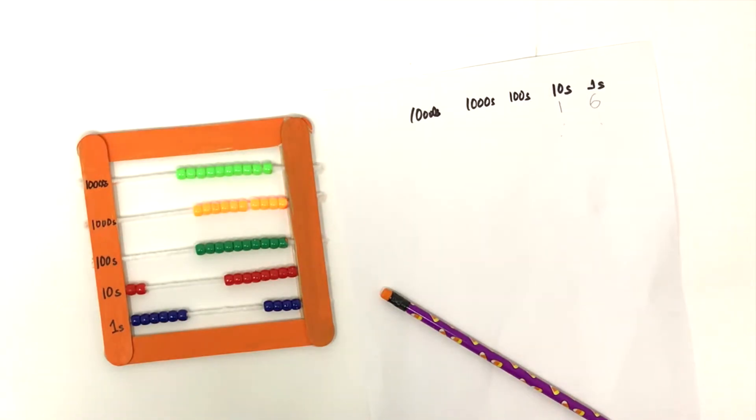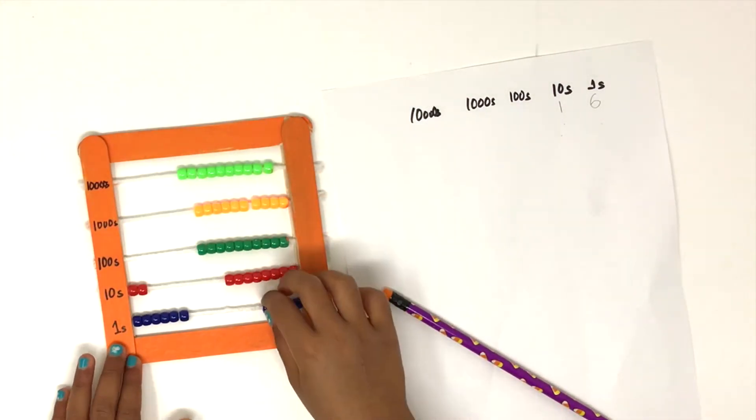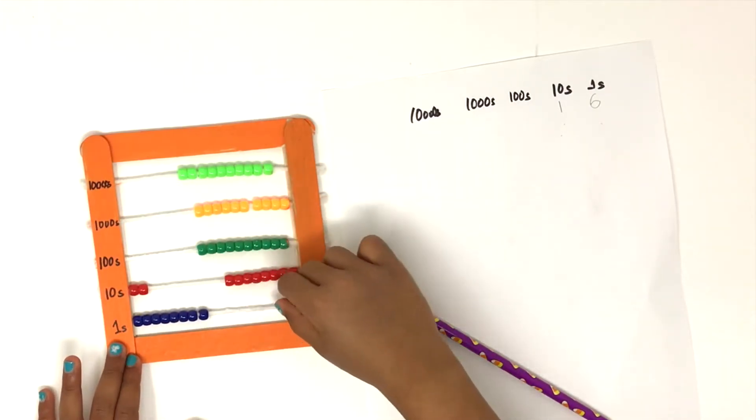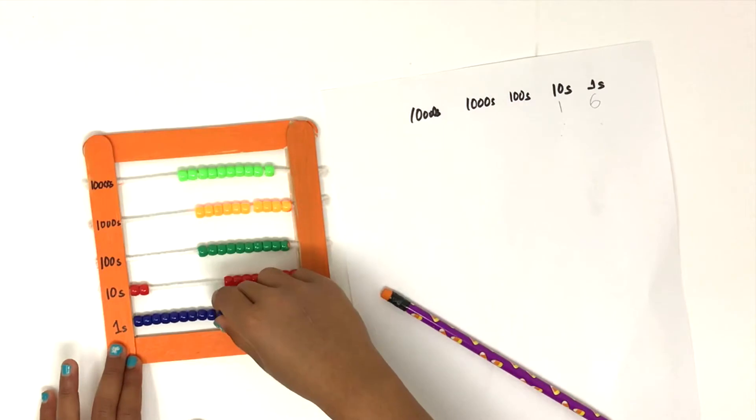Now in the ones place, how many beads do we have? Six. So how many more beads do we have to add? Six more. So let's start counting. One, two, three, four.